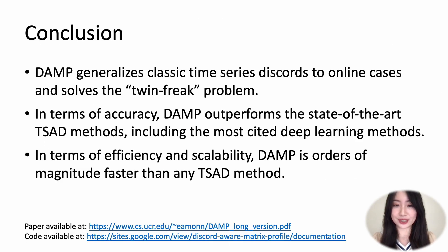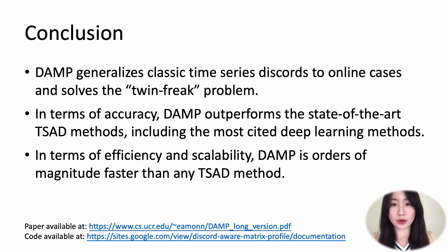As a final conclusion, in this work we introduce a novel time series anomaly detection method called DAMP. Plenty of examples and experimental results have shown that DAMP is the fastest, most scalable, and most accurate anomaly detection method out there. That's all from my presentation today — thank you for watching. I will be happy to answer any questions you may have offline. Thank you.